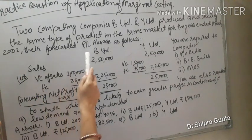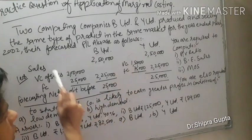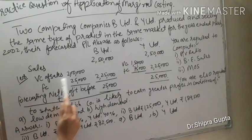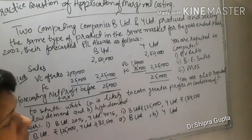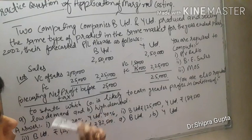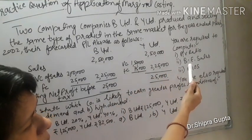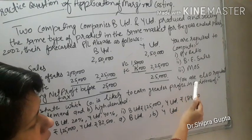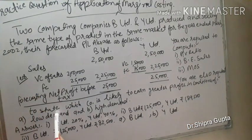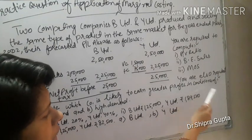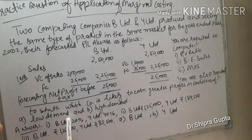Their forecasted profit and loss accounts are as follows. Sales for B Limited and Y Limited are given, variable cost for both companies is given, fixed cost for both is given, and net profit is given. You are required to calculate the profit volume ratio, breakeven sales, margin of safety, and also to state which company is likely to earn greater profits under conditions of low demand and high demand.